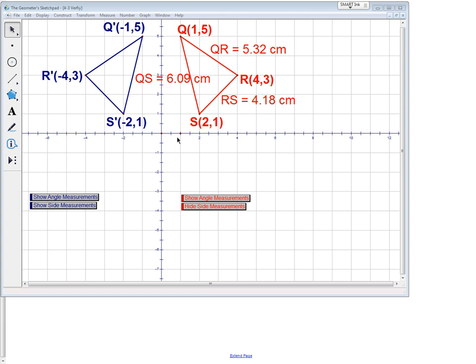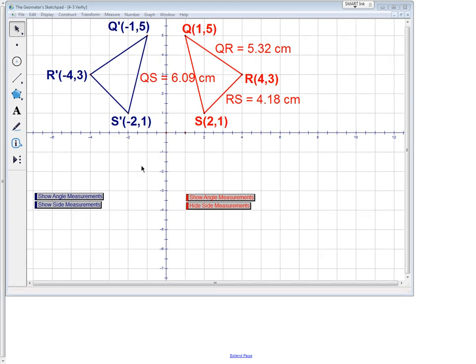If graphed out here is what the picture would look like. The red triangle is our original. Q was at (1,5), R was at (4,3) and S was at (2,1). We have done something to point Q so it is now at (-1,5). We have done something to R so now that it is at (-4,3) and something else to S so that it is at (-2,1). What we are trying to figure out is what did we do? Did we slide it? Did we turn it? Or did we flip it? And that is the correct answer. What we have done in this picture is we have flipped the triangle over the Y axis.